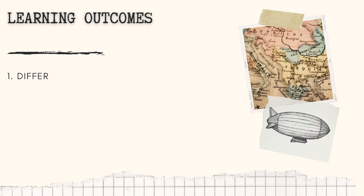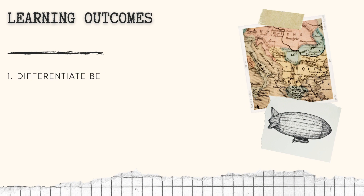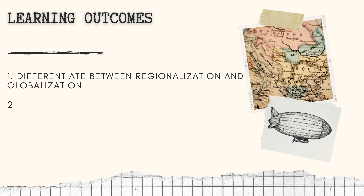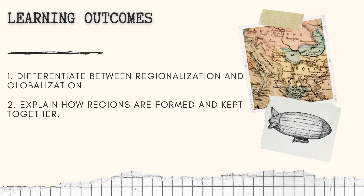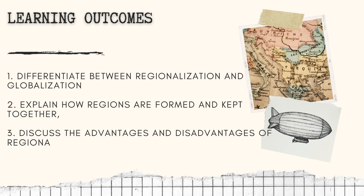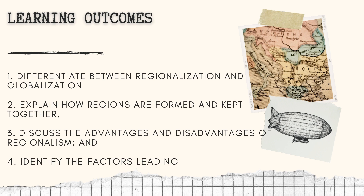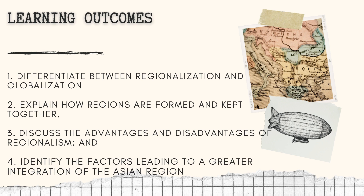Learning Outcomes. First, differentiate between regionalization and globalization. Second, explain how regions are formed and kept together. Third, discuss the advantages and disadvantages of regionalism. And fourth, identify the factors leading to greater integration of the Asian region.